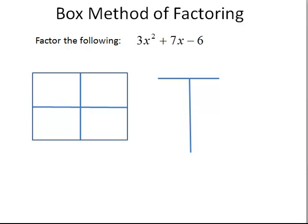We will be factoring 3x squared plus 7x minus 6 using the box method of factoring. We will first check to see if there is a greatest common factor that we can pull out. We notice there is no greatest common factor since we are looking at 3x squared plus 7x minus 6. There are no x terms to pull out and no numbers in common other than 1. So we proceed.